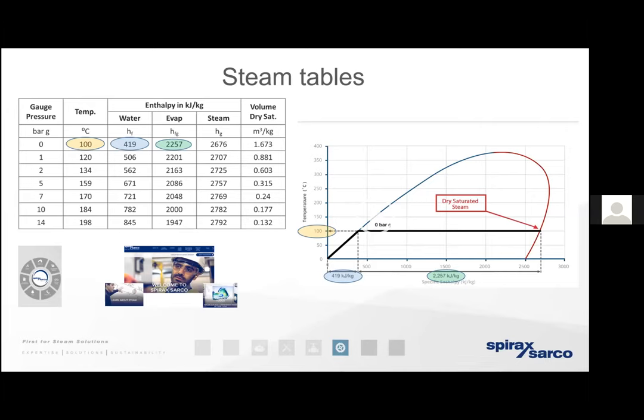As we increase the working pressure — whether at generation, distribution, or condensing — the temperature of the steam increases, the energy content required for the water to start to change state increases, the energy needed to produce steam decreases, and the total energy of the steam increases. The volume that the mass of steam occupies also decreases. To recap: when steam gives up its heat energy, it's the enthalpy of evaporation that goes into the process, and what's left behind in the condensate is the same temperature, pressure, and energy content that existed in the water before it changed state.